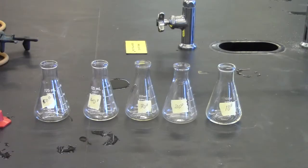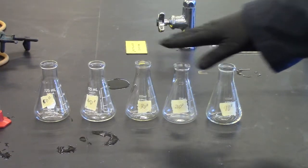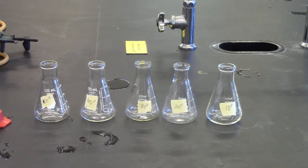Part B: Collecting Samples. Clean and label five 125 milliliter Erlenmeyer flasks. You can label them 50, 40, 30, 20, and 10 degrees Celsius.